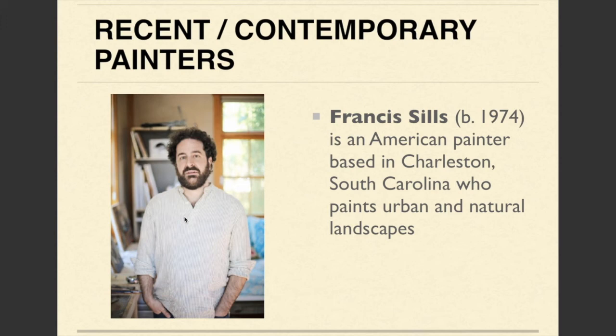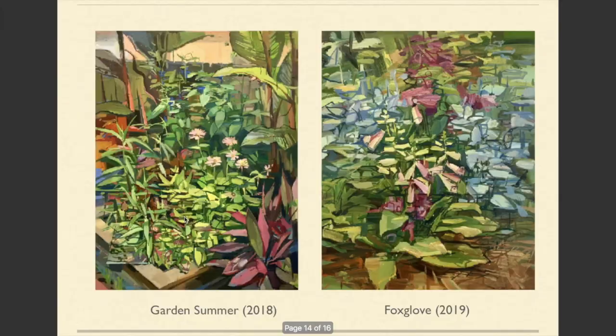Now let's take a look at Francis Sills, an American painter who works in Charleston, South Carolina, and likes to paint urban and natural landscapes. This is another artist who works in an Impressionistic style but isn't an Impressionist per se — they weren't involved with the European or American Impressionism movements. But you can see some similarities: in particular, in these two paintings you can see the use of these Impressionistic marks — short, broken marks — and not too much blending going on.